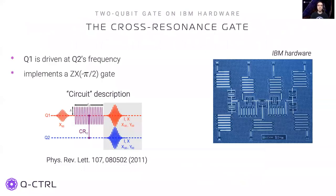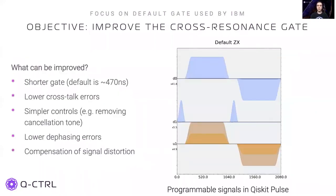We carried out our experiments on a cloud-accessible IBM superconducting qubit device composed of several fixed-frequency transmon qubits coupled via resonators. An entangling gate can be implemented through the cross-resonance interaction, which arises when one of the two connected qubits is driven at the frequency of the other, effectively implementing a ZX-theta rotation of the qubit pair. The current implementation of the CR gate is far from optimal — the gate is very long, lasting almost half a microsecond. Crosstalk between the qubits lowers fidelity, requiring an additional cancellation tone, and interaction between neighboring qubits introduces dephasing.